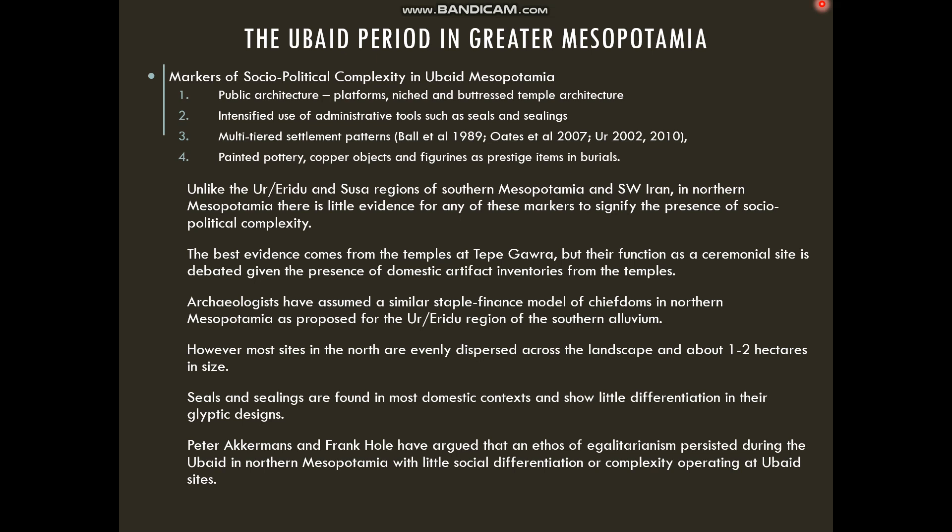Archaeologists generally assume that Stein's staple finance model for chiefdoms in southern Mesopotamia can be mapped onto northern Mesopotamia, and Stein has argued this happens implicitly through the transmission of ideas. However, most sites in the north are relatively evenly dispersed in size and location, and seals and sealings are usually found in domestic contexts showing little differentiation in their glyptic design. It doesn't look like we have centralized institutions even at Tepe Garwa controlling access to resources. This has led archaeologists including Peter Akkermans and Frank Hull to argue that Ubaid society was characterized by an ethos of egalitarianism, persisting in northern Mesopotamia with very little social differentiation or complexity.